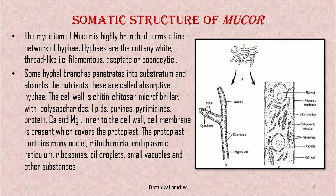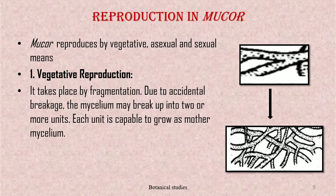Inner to the cell wall, a cell membrane is present which covers the protoplast. The protoplast contains many nuclei, mitochondria, endoplasmic reticulum, ribosomes, oil droplets, some vacuoles, and other substances. Mucor reproduces by vegetative, asexual, and sexual means.